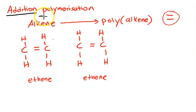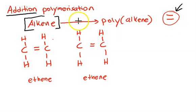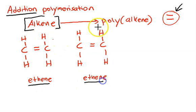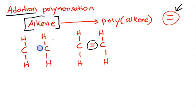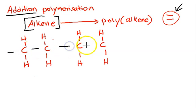For addition polymerization we must have an alkene because they do have a double bond. The word 'addition' means they just have to add on. For example, here we have one molecule of ethene and a second molecule of ethene. What happens is this double bond will break to form a single bond, and they will be interconnecting with each another. This is how they can multiply themselves — they just have to add on.